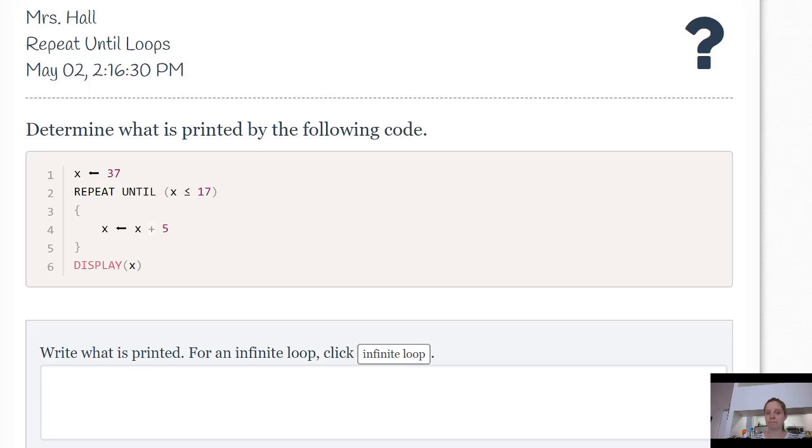Let's do another one. Determine what is printed by the following code. x gets assigned the number 37, and we're going to repeat until x is less than or equal to 17. Well, x is not less than or equal to 17, so it says x gets x plus 5, so x becomes 42.